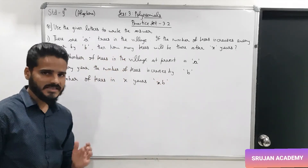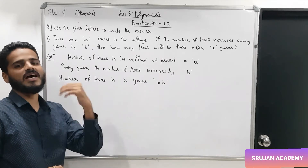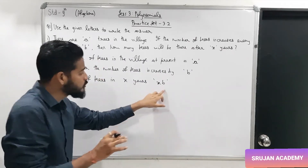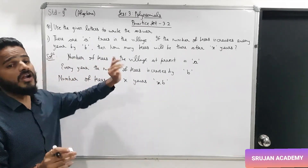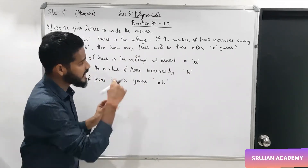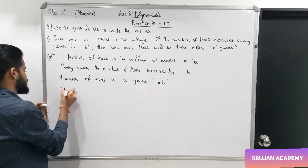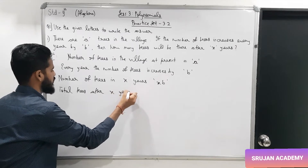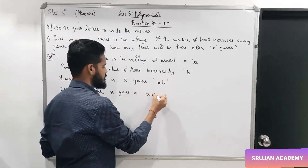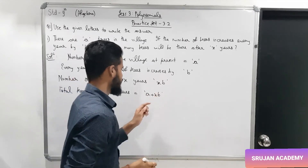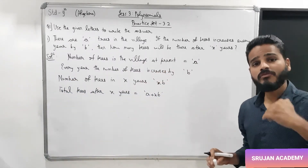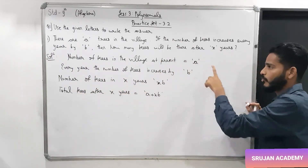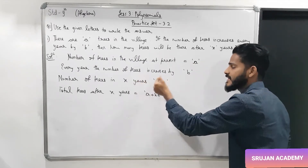Because in 1 year b trees are added, in 2 years 2 into b, in 3 years 3 into b, in 4 years 4 into b — so in x years it is x into b. Now the total number of trees after x years will be a plus xb, because xb is how many trees were added in x years, but there were already 'a' trees present. So after x years, total number of trees = a + xb.